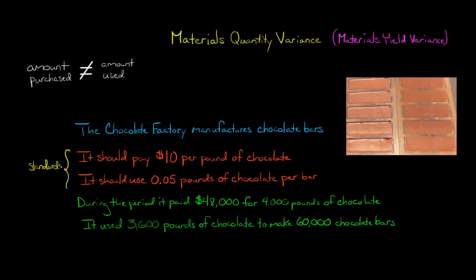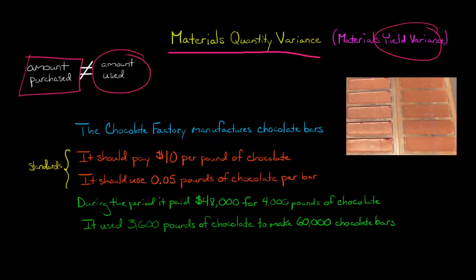In this video, I want to show you how to calculate the materials quantity variance, which is also known as the materials yield variance, when the amount of materials purchased is different from the amount of materials that are actually used.